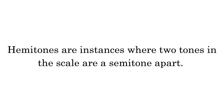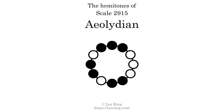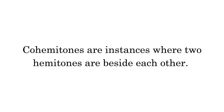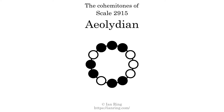Hemitones are instances where two tones in the scale are a semitone apart. This scale has four hemitones. They are at positions here, here, here, and here. Co-hemitones are instances where two hemitones are beside each other. This scale has one co-hemitone, here.